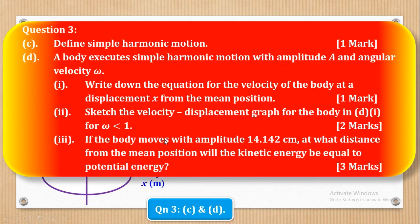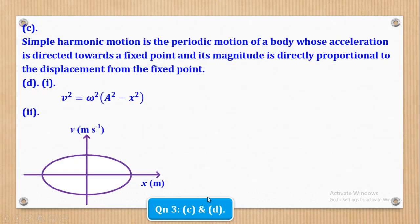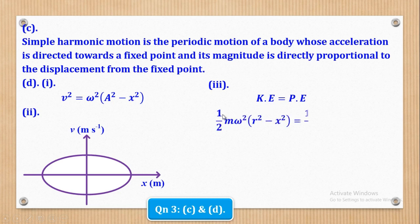Roman 3 says: if the body moves with amplitude 14.142 centimetres, at what distance from the mean position will the kinetic energy be equal to the potential energy? They give it 3 marks. You need the expression for kinetic energy: KE = ½mω²(A² − x²), remembering that KE = ½mv² and substituting v² = ω²(A² − x²). For potential energy: PE = average force × displacement = ½mω²x × x = ½mω²x².